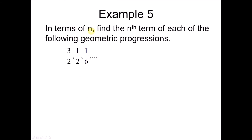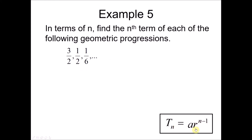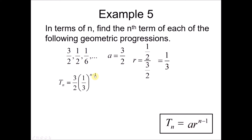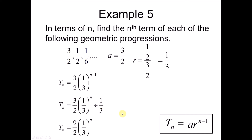Example 5: find the nth term in terms of n. For the GP with a = 3/2 and r = (1/2) ÷ (3/2) = 1/3, substitute into the formula. Simplifying: (1/3)^(n−1) means (1/3)^n divided by (1/3). Be careful — a common mistake is to cancel the 9 and 3, but you cannot do this because 1/3 is raised to the power of n.